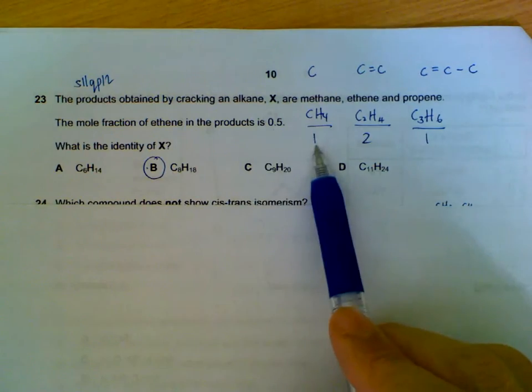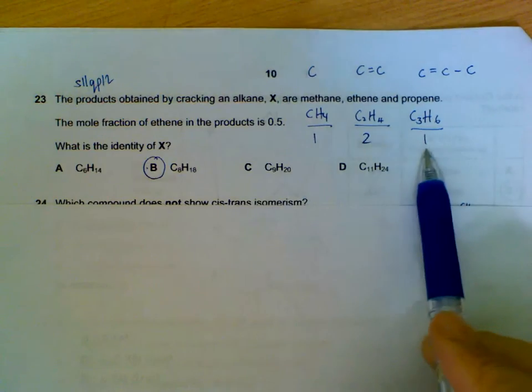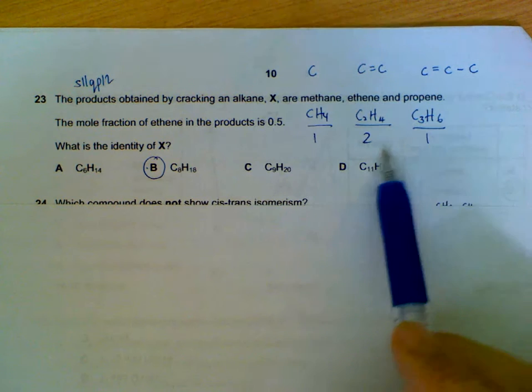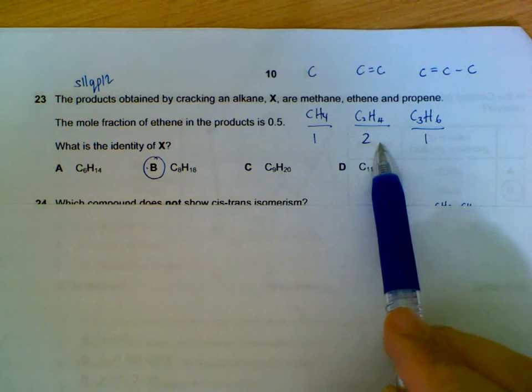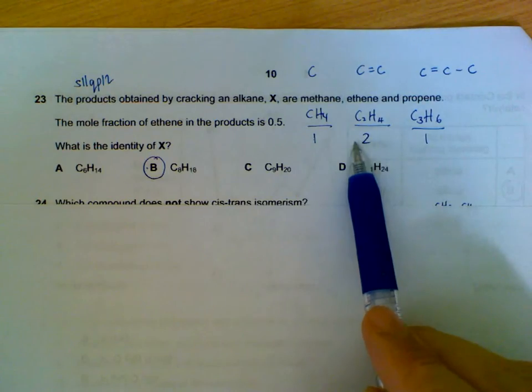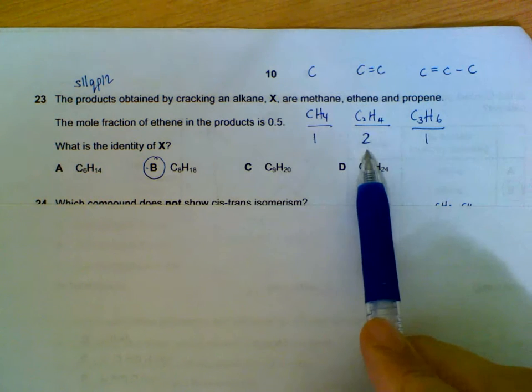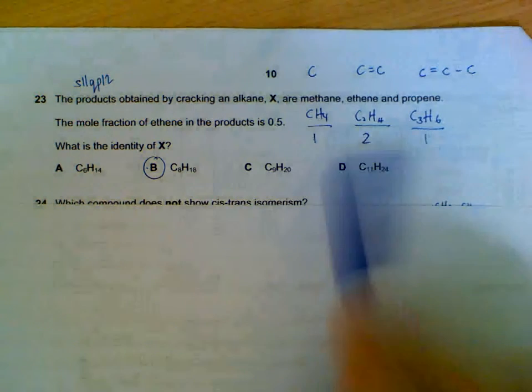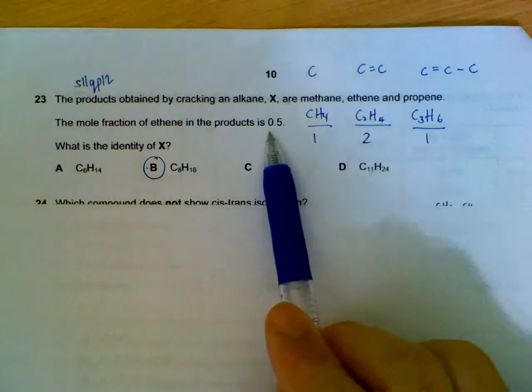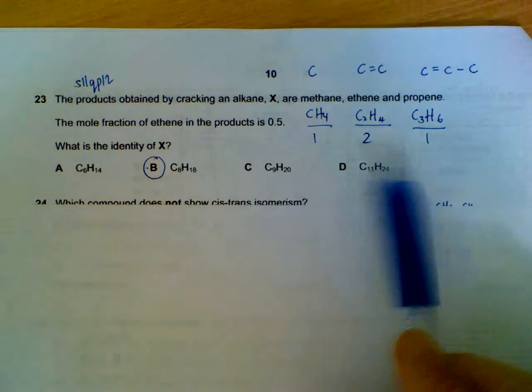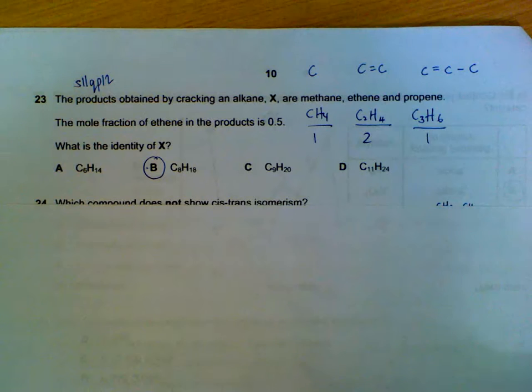I'll choose methane as a basis. I'll put one mole here. That means I can also put one mole for your propene. For convenience sake, I'll put one, one here. And then since half of the mole fraction is for ethene, I'll have to put two here. Because two out of total of four will give us 0.5. It's a bit of trial and error. I'll just choose convenient small numbers to start off with.